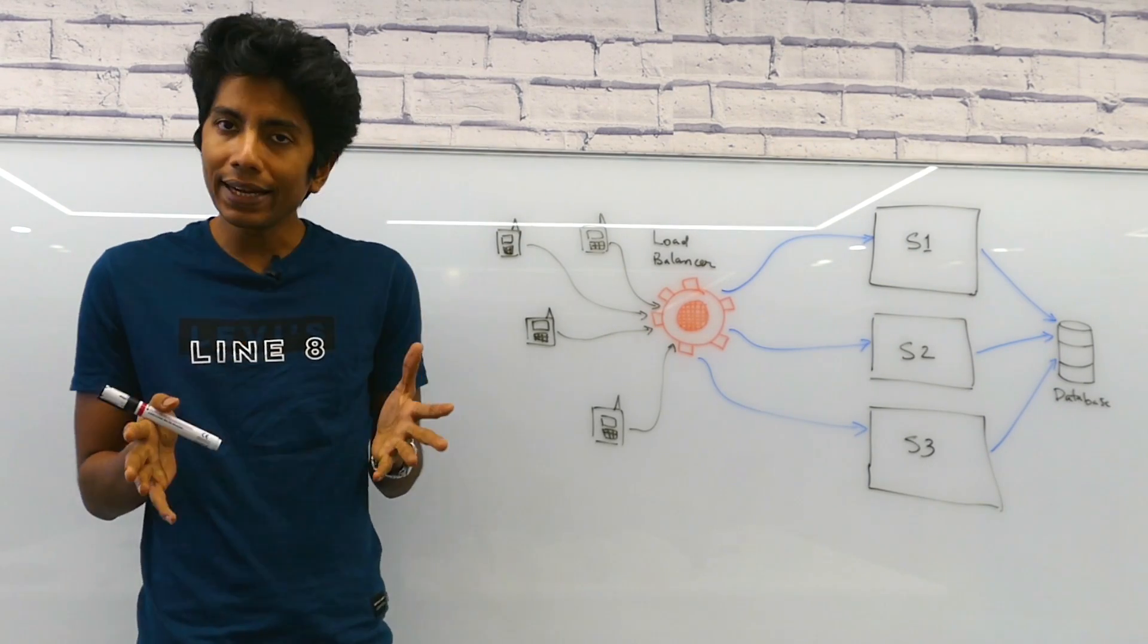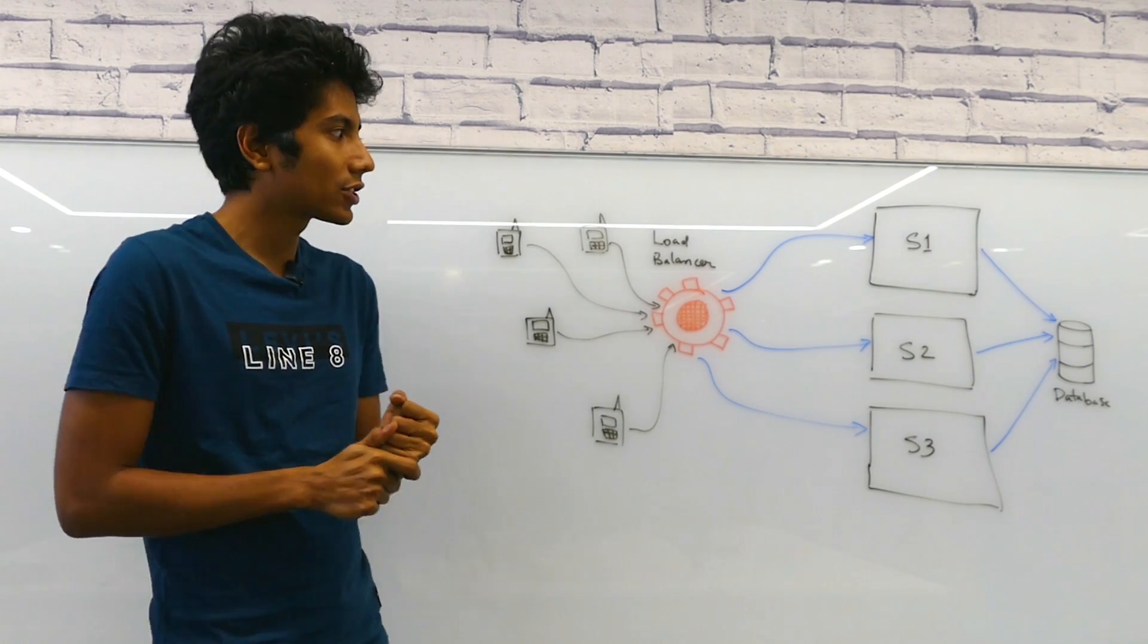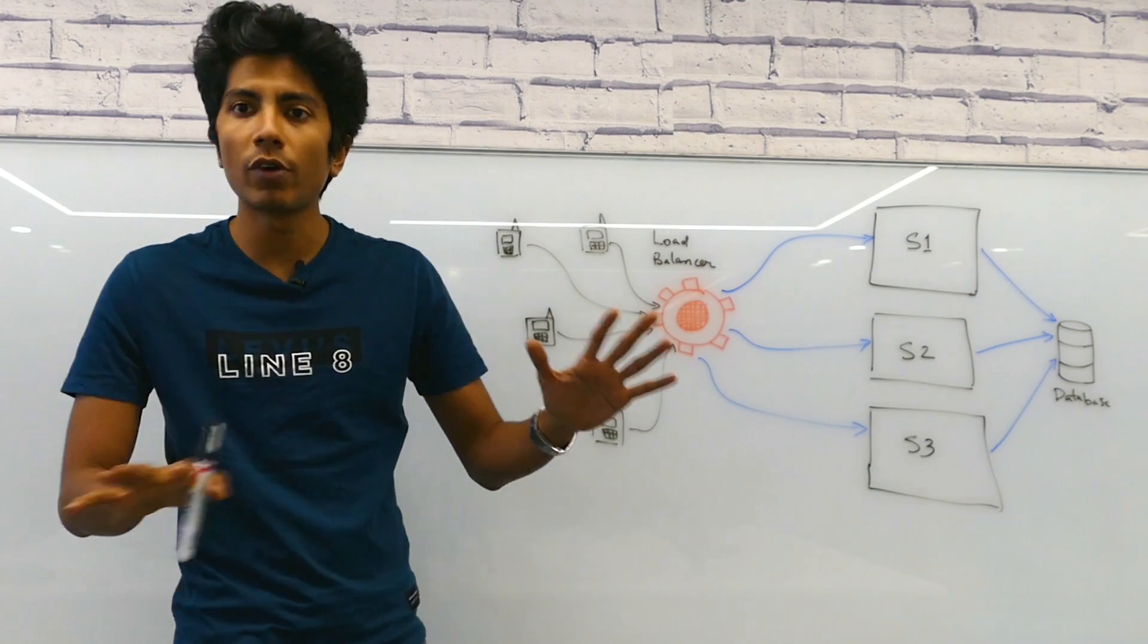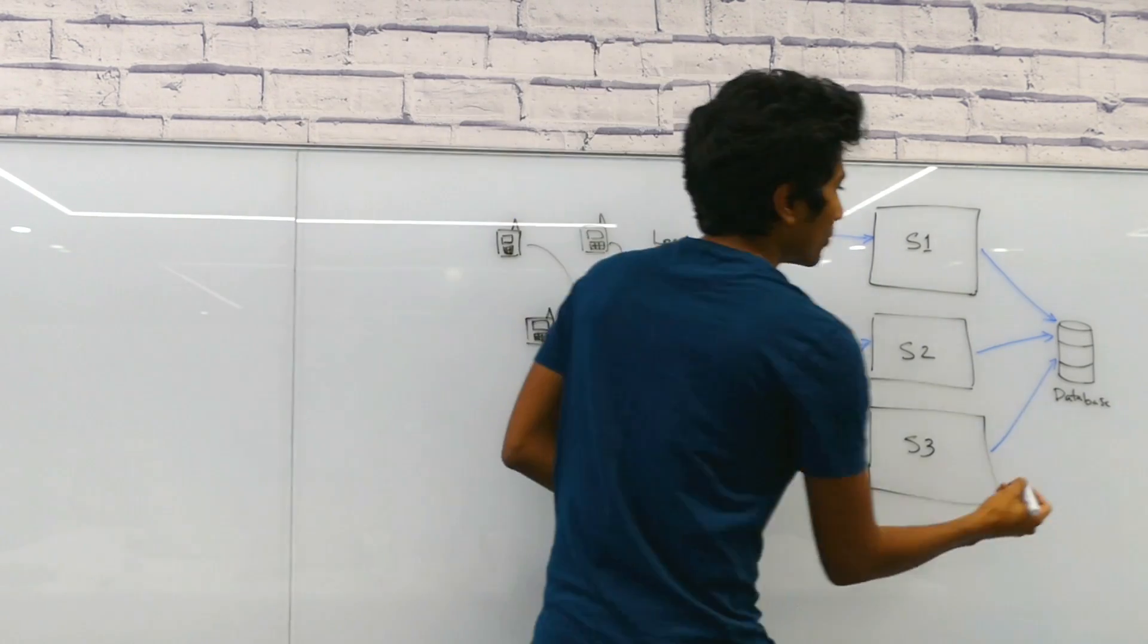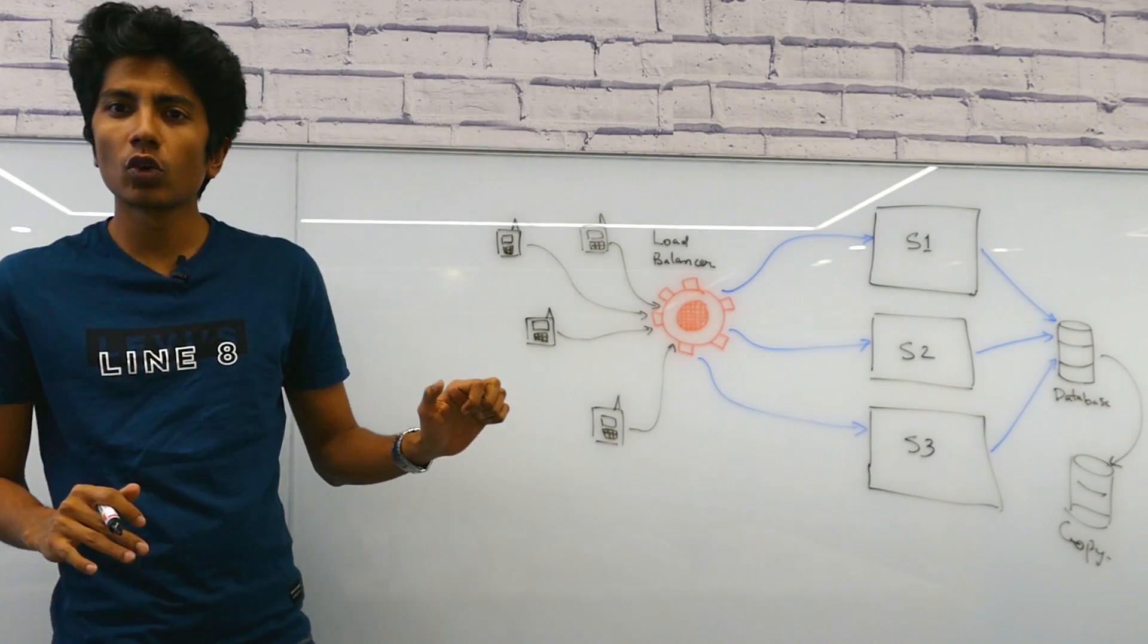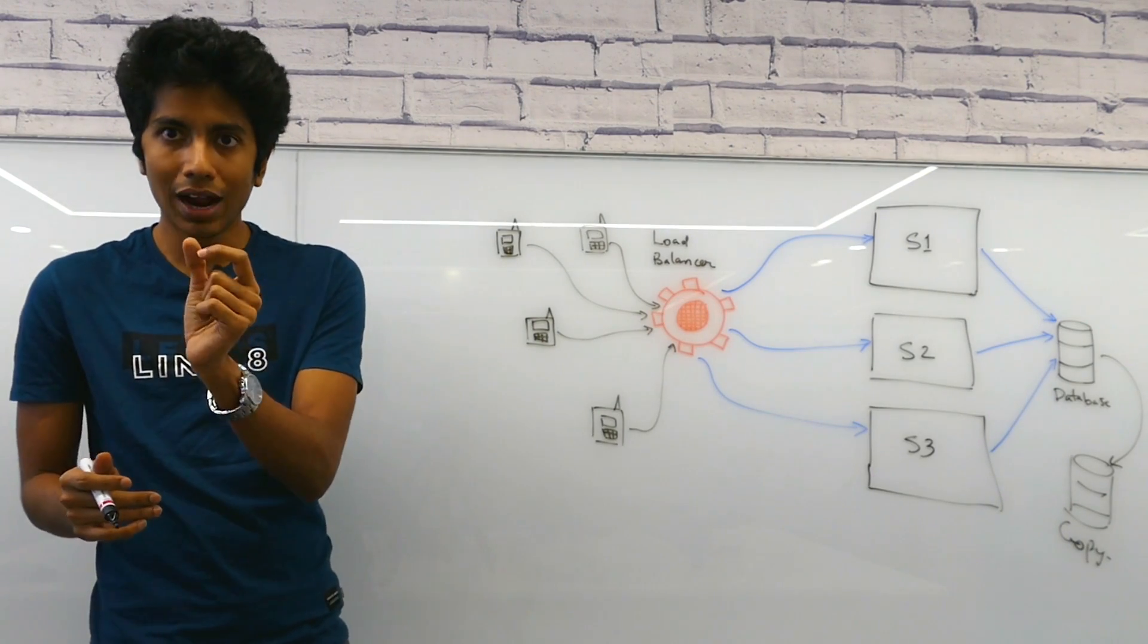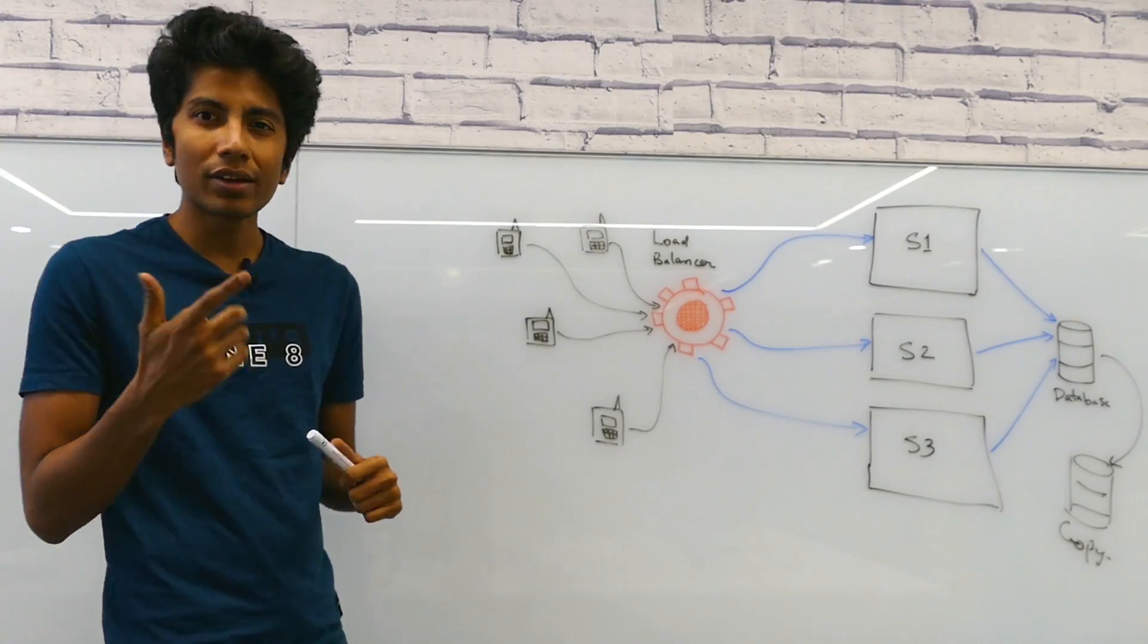So to avoid that kind of a problem there's many things you can do but the simplest solution is just to replicate the data that you have in that database and store it somewhere else. Just have a copy. So that's what we're going to do. We are just going to make a copy. This copy is preferably stored in some other hardware component because if that hardware crashes then you shouldn't have the copy also crashing.